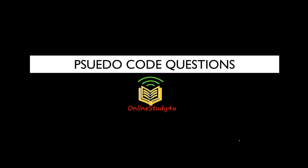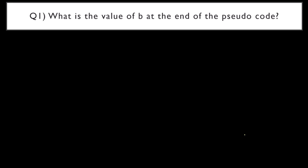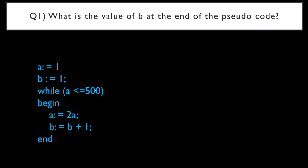The first question is: what is the value of b at the end of the pseudocode? The given pseudocode is: a := 1, b := 1. Note that the colon here means nothing but assignment, equal to. While a is less than or equal to 500, begin: a := 2 power a, b := b + 1, end. Options are: a) 4, b) 5, c) 6, d) 7.